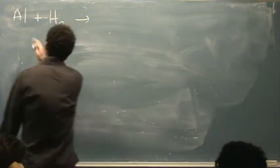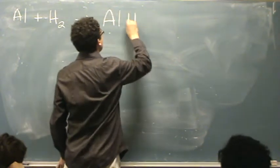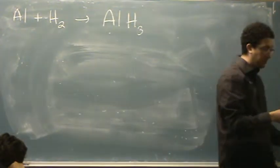So the products, you want to think of aluminum with an H minus, Al H3. Why H3? Because aluminum is 3 plus.